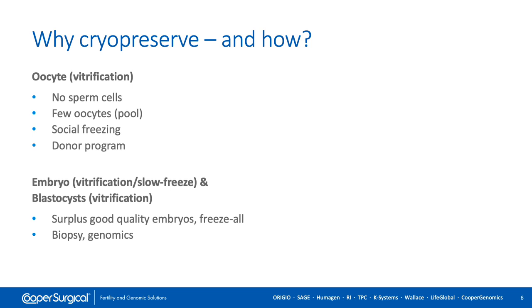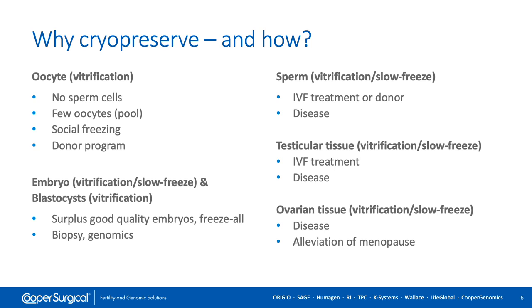Nowadays, we can cryopreserve embryos at all pre-implantation stages of development, as well as ovarian and testicular tissues. There is evidence in favor of vitrification for oocyte freezing. Oocyte vitrification is widely used in the case of absent sperm on the day of pickup, for oocyte pooling, social freezing, and donor programs. Embryos can be cryopreserved with comparable outcomes using either slow freezing or vitrification, but for blastocysts vitrification is the preferable technique. We mostly cryopreserve embryos in freeze-all cycles, for surplus good quality embryos, and for PGT cycles. Sperm can be cryopreserved by both methods in the case of disease, preparation for IVF, or for donor programs.